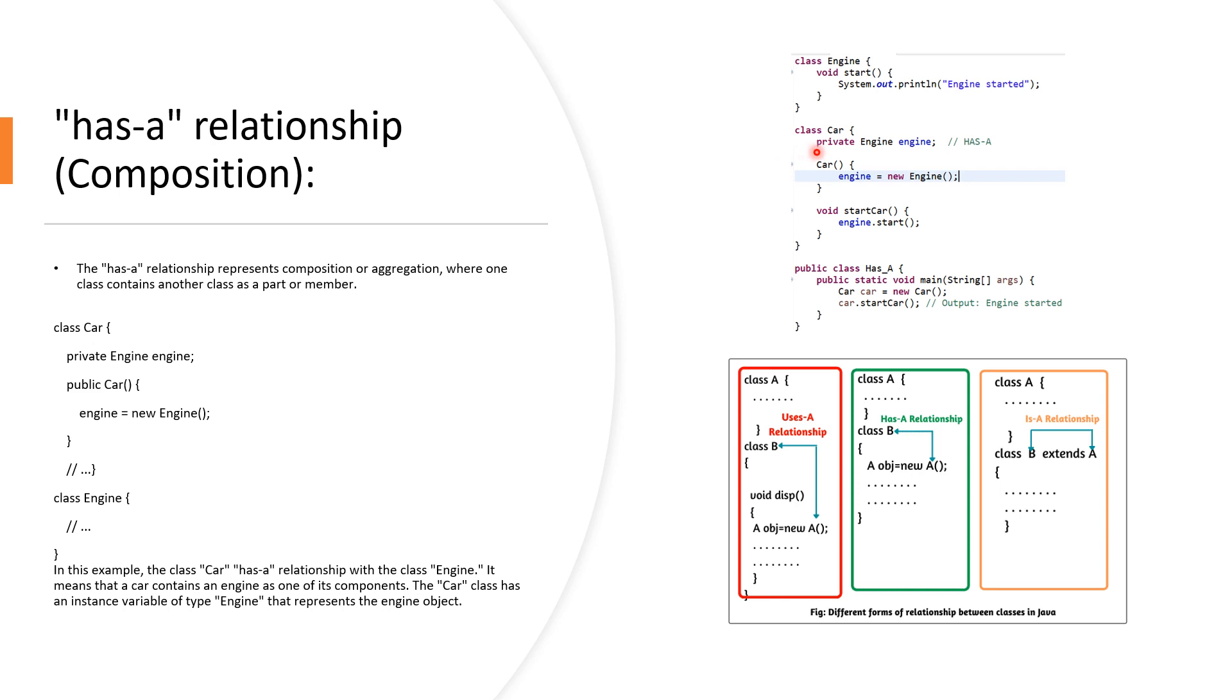In this example, the Car has a relationship with the class Engine. It means that a car contains an engine as one of its components. The Car class has an instance variable of the type Engine that represents the engine object.